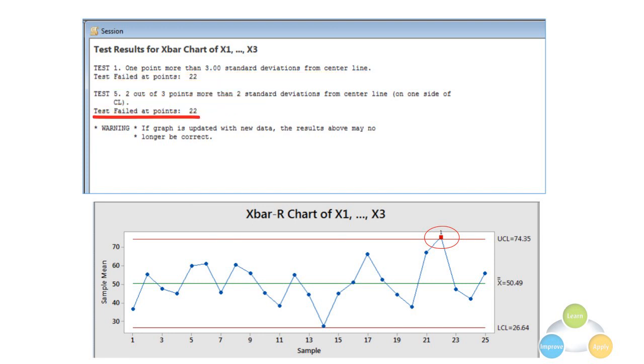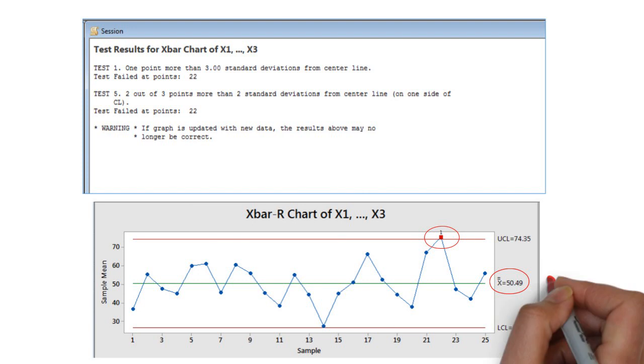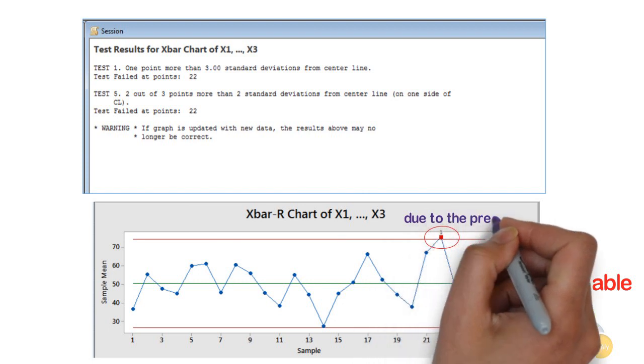Again, observation number 22 also failed test 5, which tests for 2 out of 3 points that fall more than 2 standard deviations from the center line. Test 5 provides additional sensitivity for detecting smaller shifts in the process mean. This X bar chart indicates that the process average is unstable and the process is out of control, possibly due to the presence of special causes.